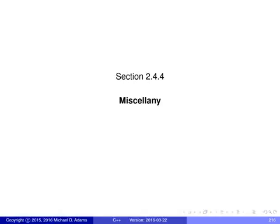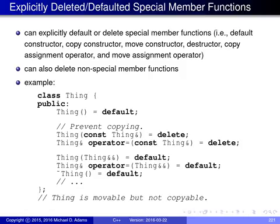In this section, I'm going to talk about a few miscellaneous aspects of classes that haven't yet been discussed. As discussed earlier, there are certain special member functions of a class that, if you don't provide them, the compiler may under certain circumstances provide them for you automatically. These special member functions include the default constructor, the copy and move constructors, the destructor, and the copy and move assignment operators.